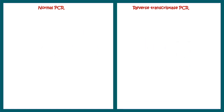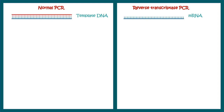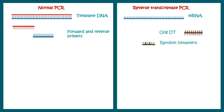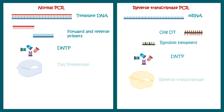Let's compare normal PCR with reverse transcriptase PCR. In normal PCR, the template is DNA, whereas in RT-PCR, mRNA acts as the template. In normal PCR, forward and reverse primer cocktails are used, while in RT-PCR, oligo-dT and random hexamer primers are used. dNTPs are used in both reactions. Normal PCR uses Taq polymerase, whereas RT-PCR uses reverse transcriptase enzyme.